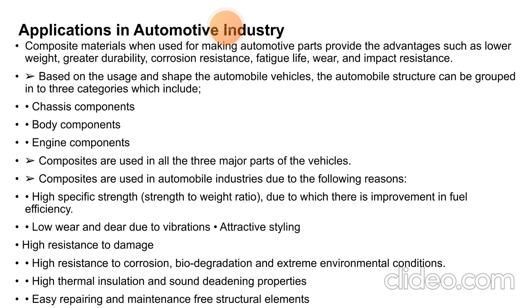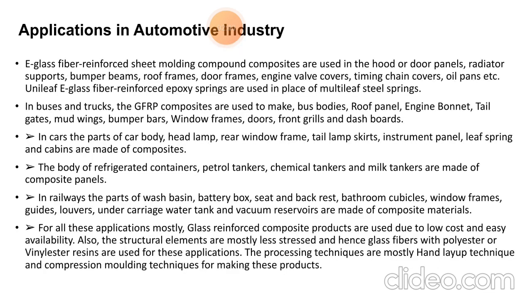By replacing conventional steel and stainless steel materials with aluminium, E-glass fiber reinforced sheet molding composites are used in hood and door panels, radiators, support bumper beams, roof frames, door frames, engine walls, covers, timing chain covers, oil pans, etc. Unidirectional E-glass fiber reinforced epoxy springs are used in place of multi-leaf steel springs.